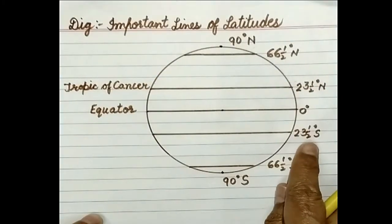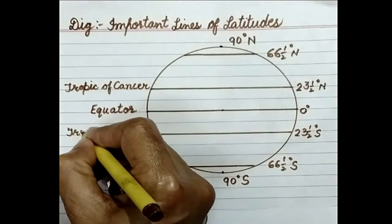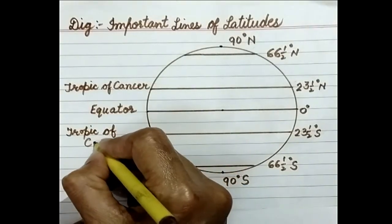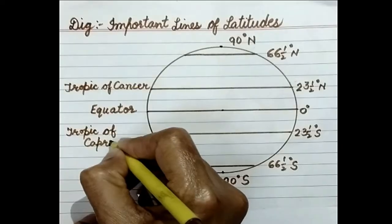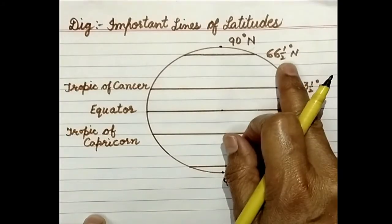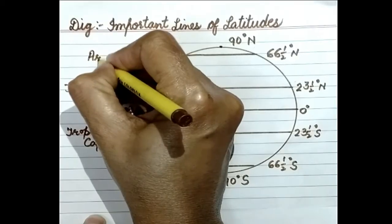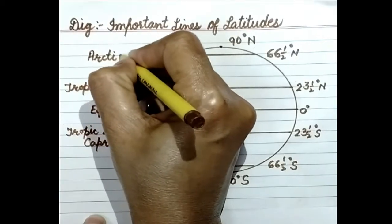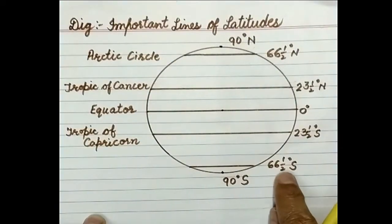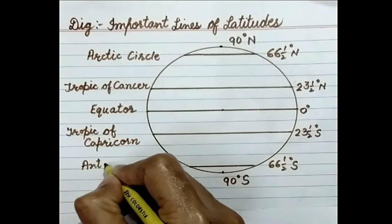23 and half degree south will be Tropic of Capricorn. 66 and half degree north is called Arctic Circle. 66 and half degree south is called Antarctic Circle.